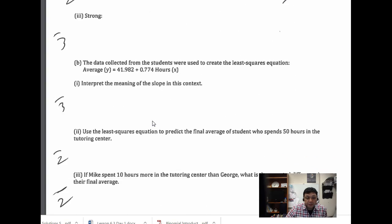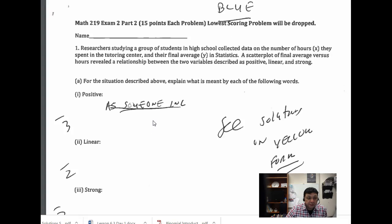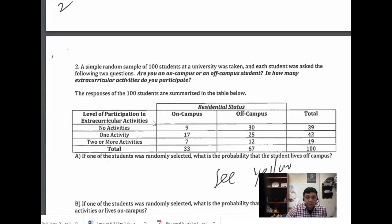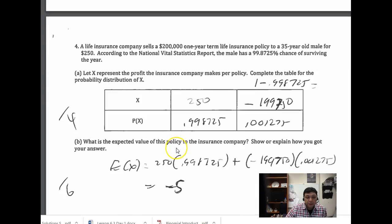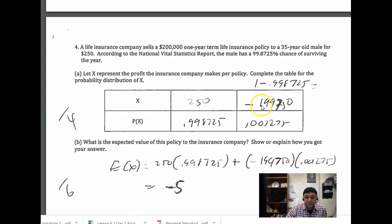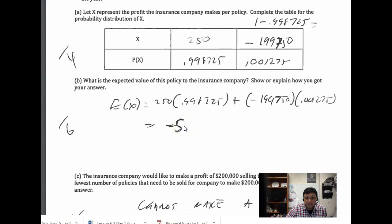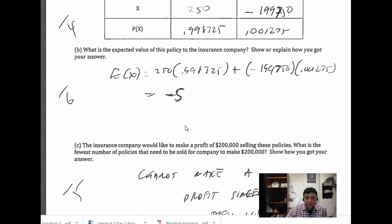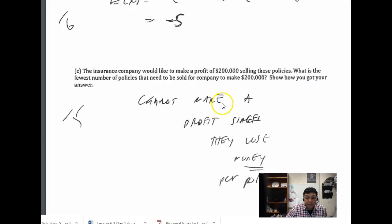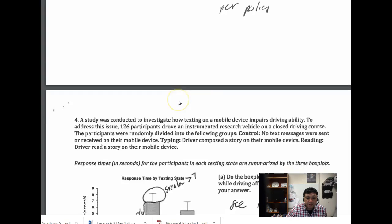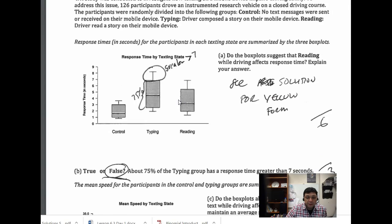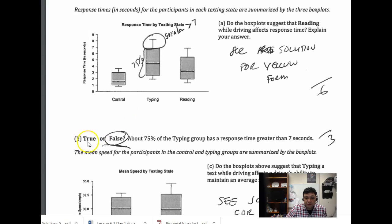And then the blue one is similar, this question similar to the yellow one. This one here is the same as the other exam. The insurance problem is a little different, different numbers. It's $250 in this case, they lose $199,000. So when you do your calculation, this time the insurance company loses $5 per policy. So in this case it's impossible for them to make a profit because they lose $5.